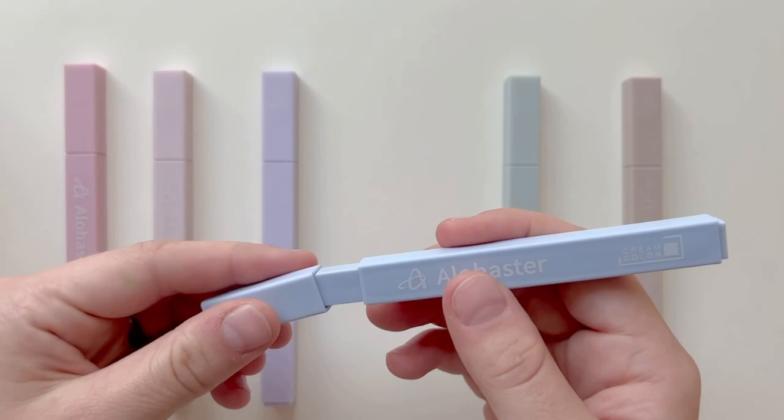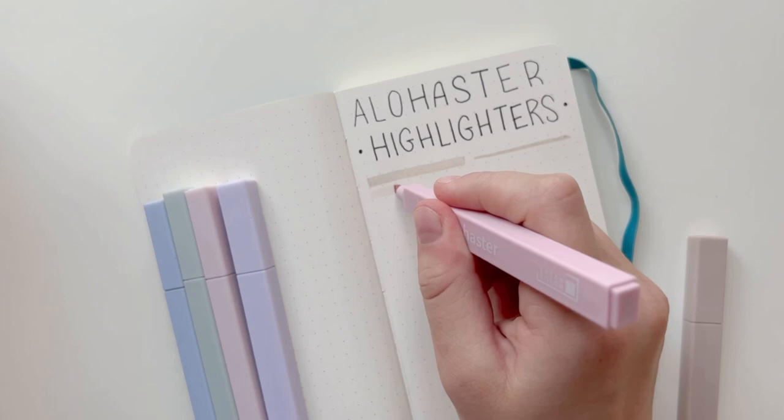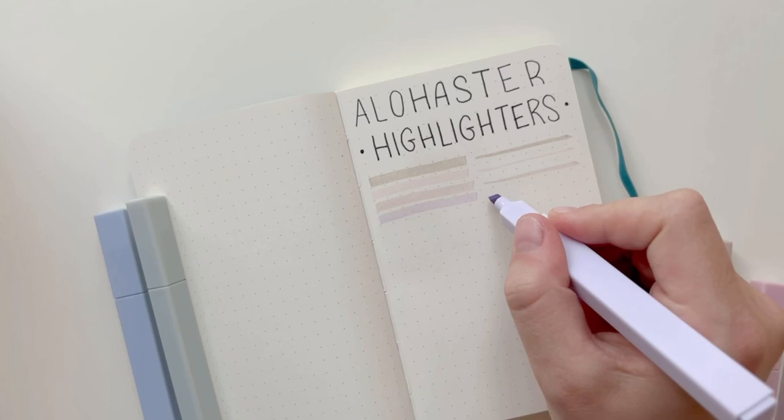They're chisel tipped, have a very comfortable hold, and write evenly. Alihaster highlighters don't smear or bleed, they dry super fast, and they don't show through even the thinnest of bible pages. Here you'll see how each color looks.